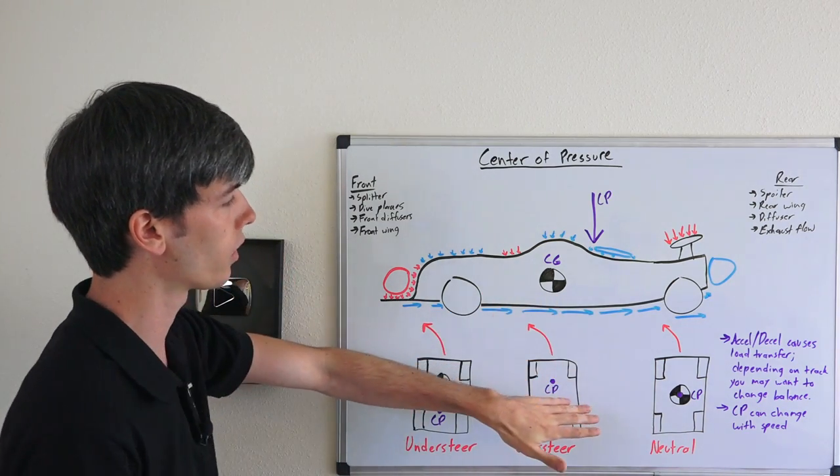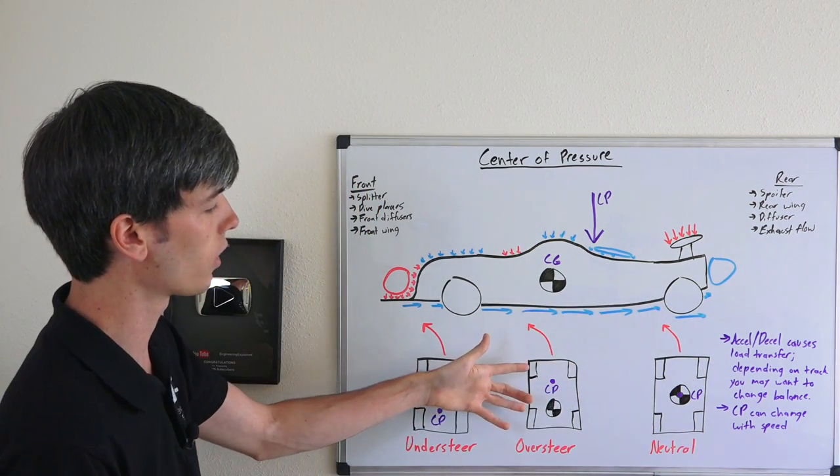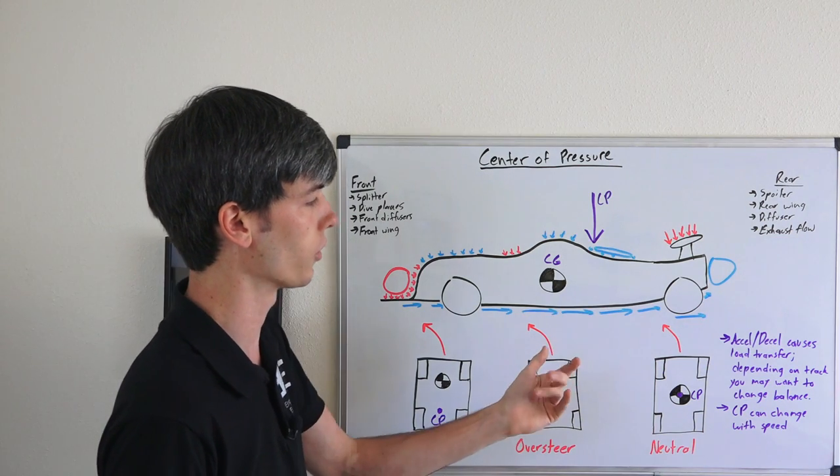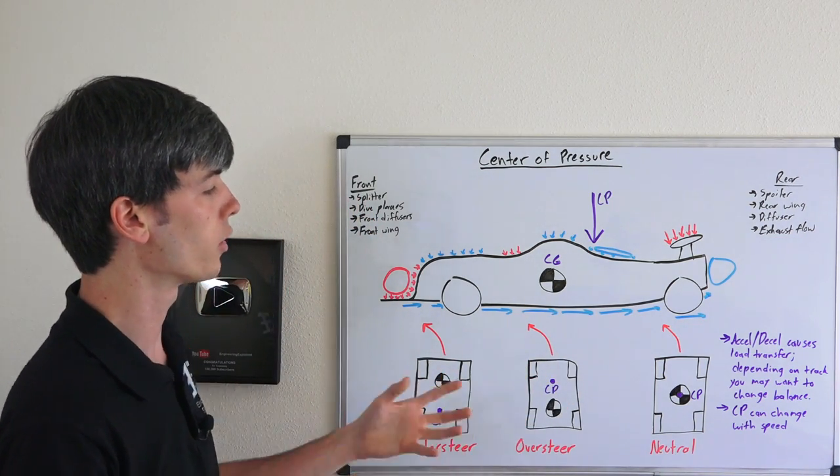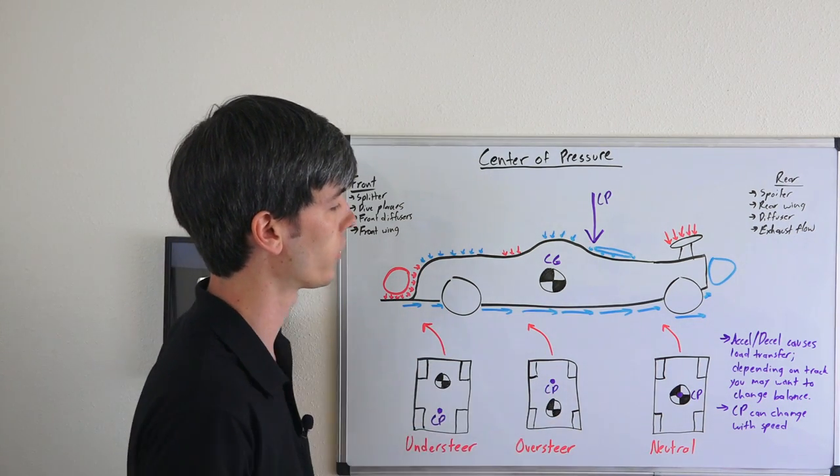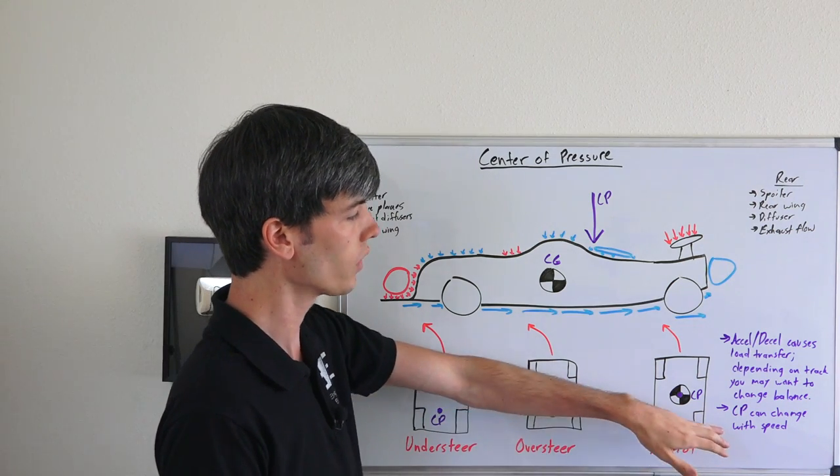Now this does depend on a few things. While you're going around a track, you're accelerating and decelerating, and this is causing load transfer between the front and rear axles. Depending on which track you're on, you may want to change the balance slightly depending on the characteristics of that track and where you're keeping your weight primarily.